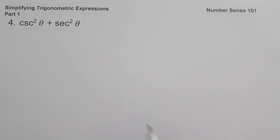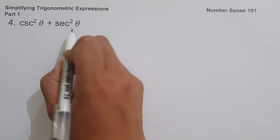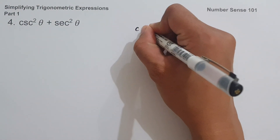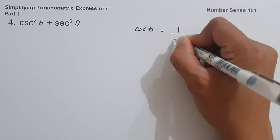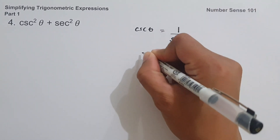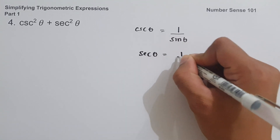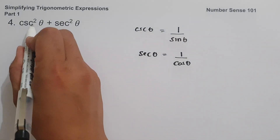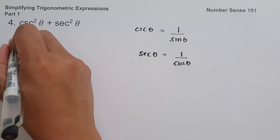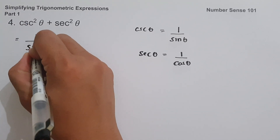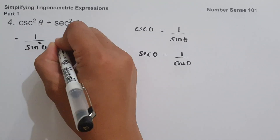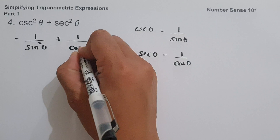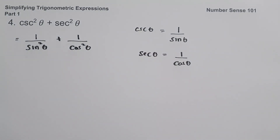On example number four, we have csc²θ + sec²θ. We know the reciprocal of csc θ is 1/sin θ, and the reciprocal of sec θ is 1/cos θ. So we rewrite this as 1/sin²θ + 1/cos²θ.